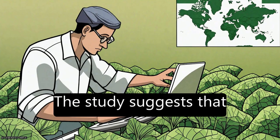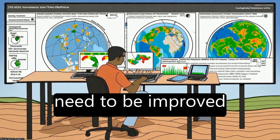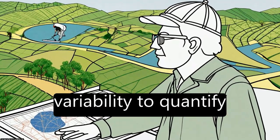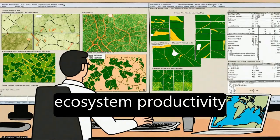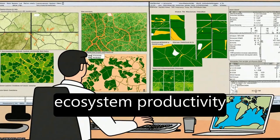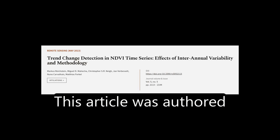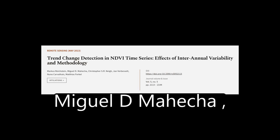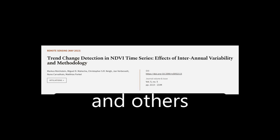The study suggests that seasonal trend methods need to be improved against inter-annual variability to quantify changing trends in ecosystem productivity with higher accuracy. This article was authored by Marcus Reichstein, Miguel de Mecheche, Christopher S. R. Ney, and others.